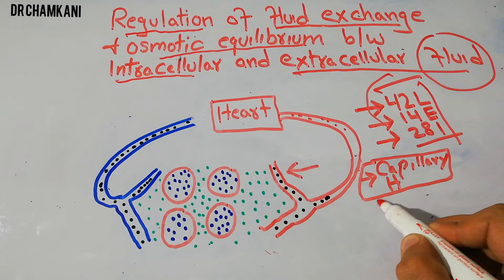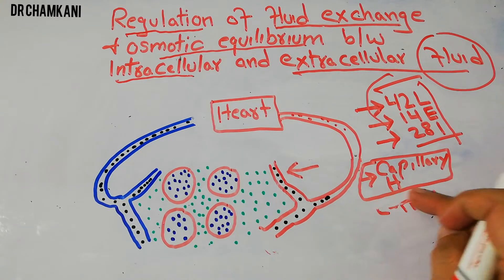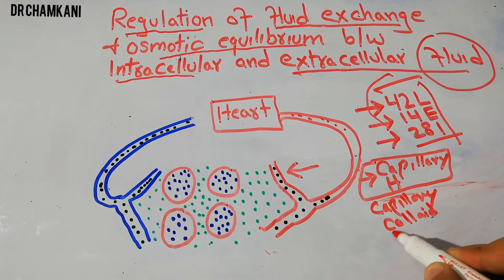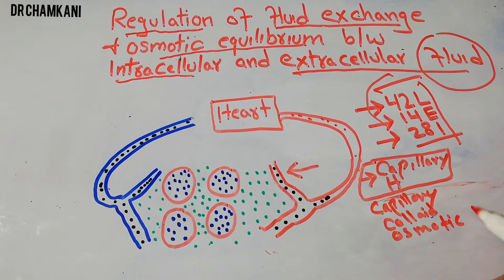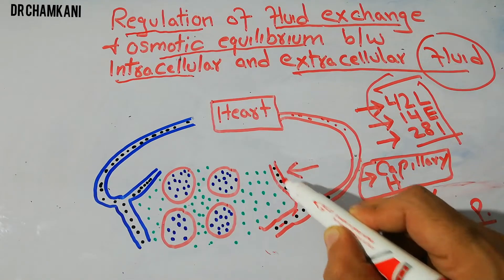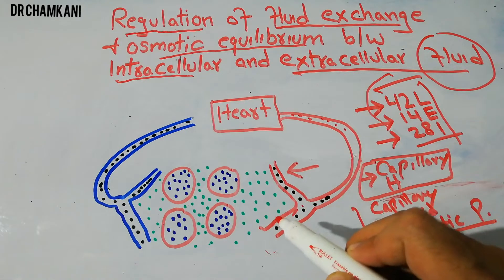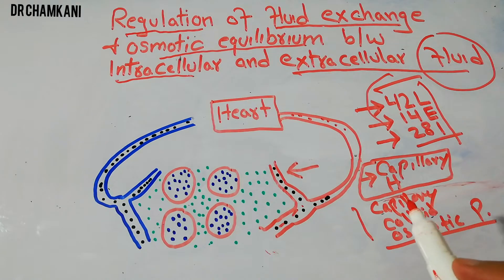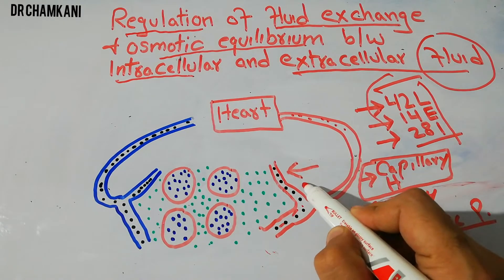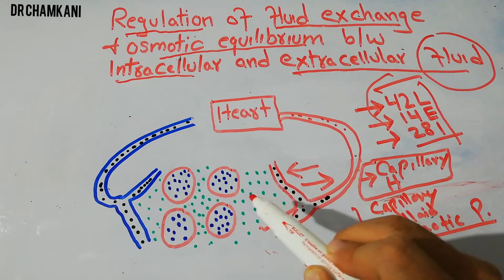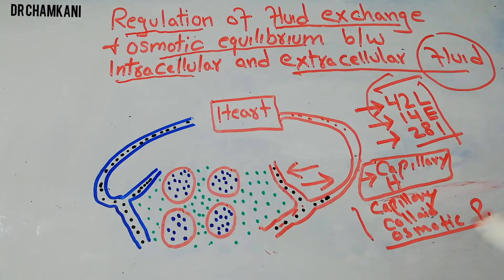There is another pressure known as capillary colloid osmotic pressure, also known as oncotic pressure. This pressure is basically due to proteins present in the plasma. The capillary hydrostatic pressure forces fluid out, while the capillary colloid osmotic pressure — due to proteins — forces fluid inside the capillaries. It is basically pulling the fluid from the interstitium into the capillaries.